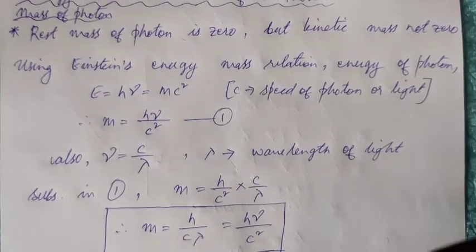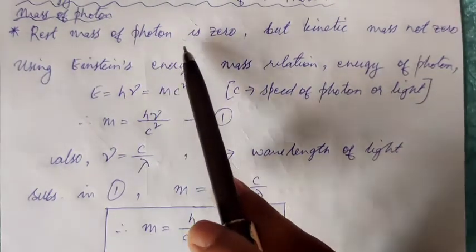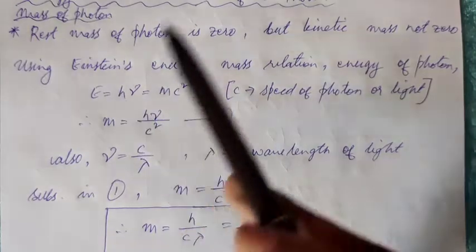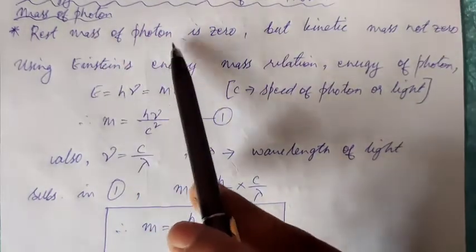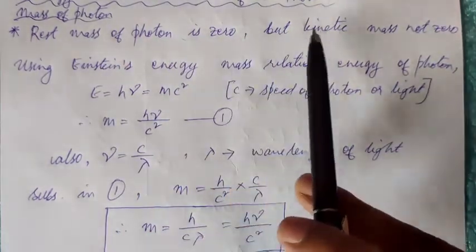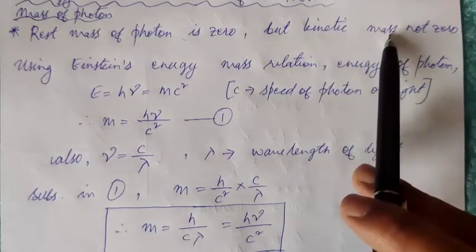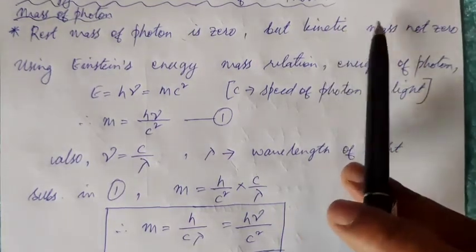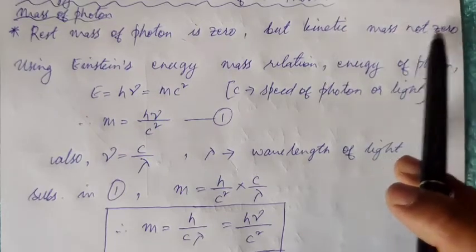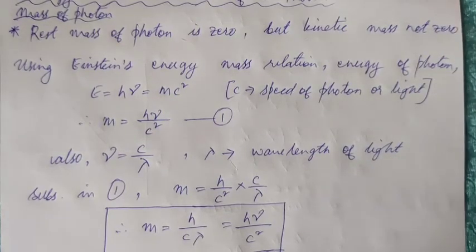Now for a photon, remember a photon is never at rest. A photon is always mobile. Therefore, the rest mass of a photon is zero. But since it is always mobile, it has some kinetic energy or rather its kinetic mass. Therefore, the kinetic mass of a photon is not zero.